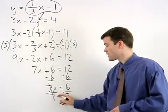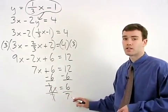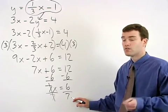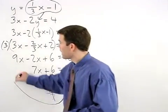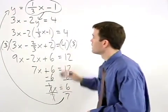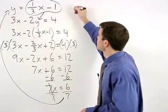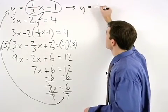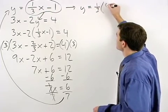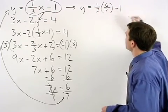And notice that x equals the fraction 6 sevenths. To find y, we plug 6 sevenths back in for x in our first equation to get y equals 1 third times parentheses 6 sevenths minus 1.